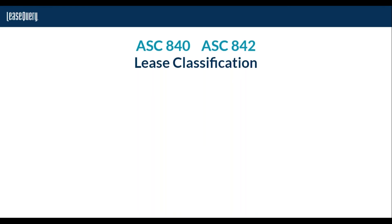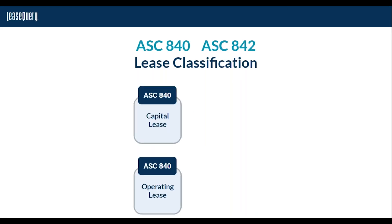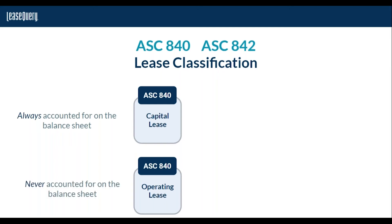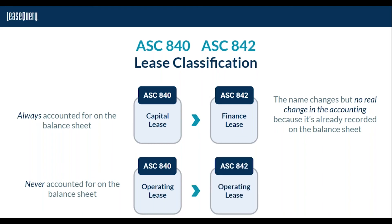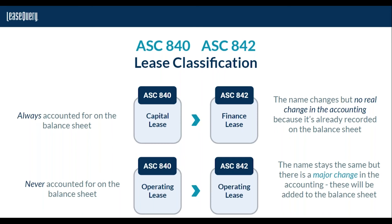So we move from lease accounting under ASC 840, with lease categories of capital and operating — capital leases always recorded on the balance sheet and operating leases only accounted for in the income statement — to lease accounting under ASC 842, still using the dual category methodology but with changes. Capital leases will be accounted for the same way but with a nomenclature change: they will now be called finance leases because all leases are now capitalized or added to the balance sheet. The finance lease category will be more like a finance purchase. Meanwhile, operating leases will still be called operating leases, but under ASC 842 we will now record a lease liability and a right-of-use asset for an operating lease.